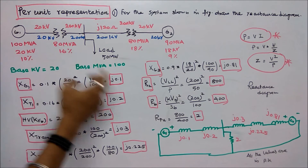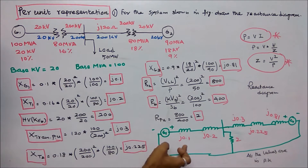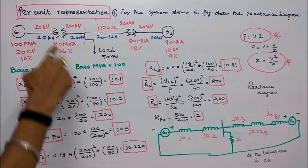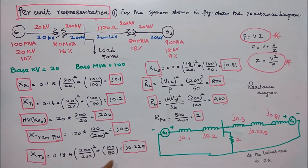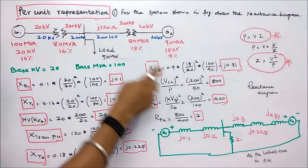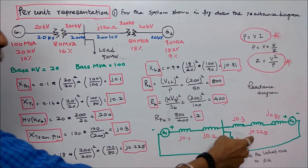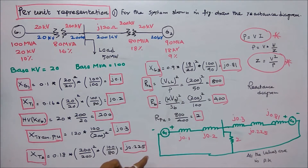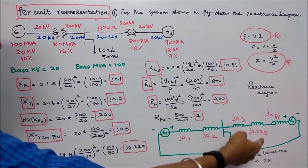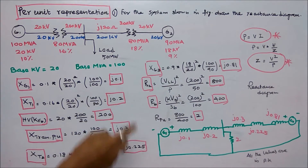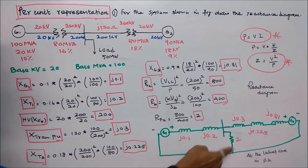This is the reactance diagram. One is the generator at j0.1, second is the transformer at j0.2, third is the transmission line at j0.3, fourth is the transformer at j0.225, fifth is the generator at j0.81, and sixth is the resistive load at 2. All values are in per-unit.